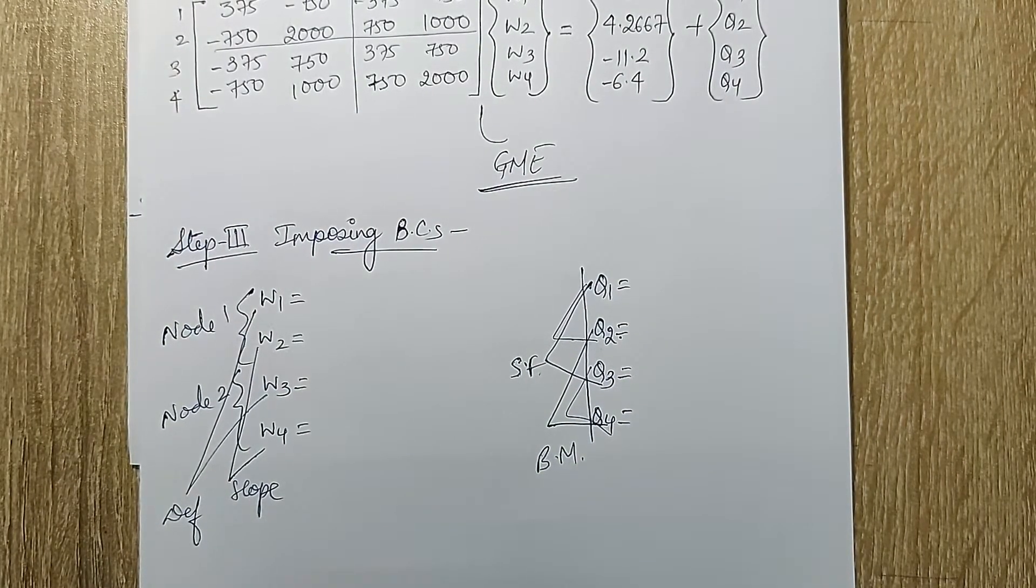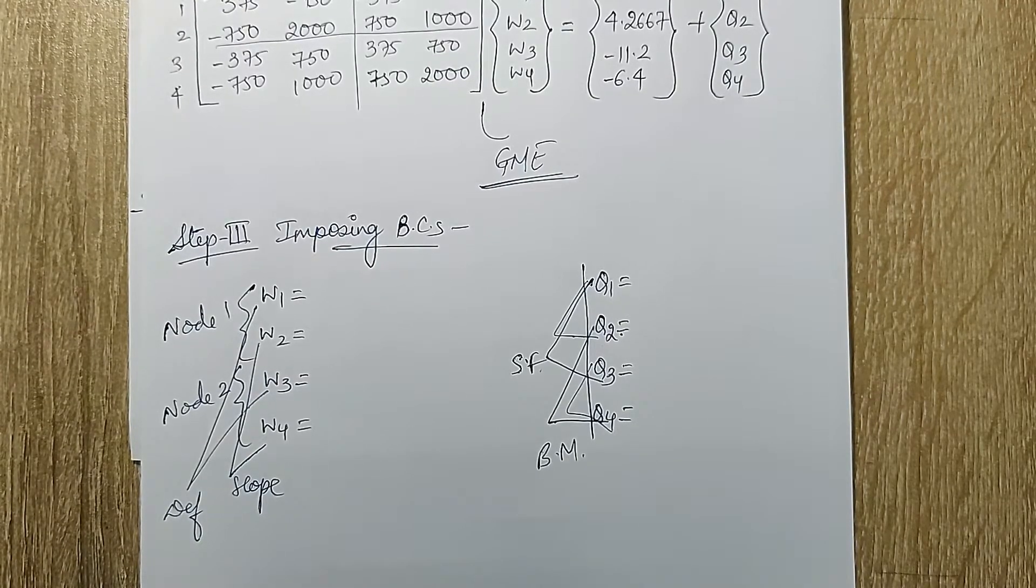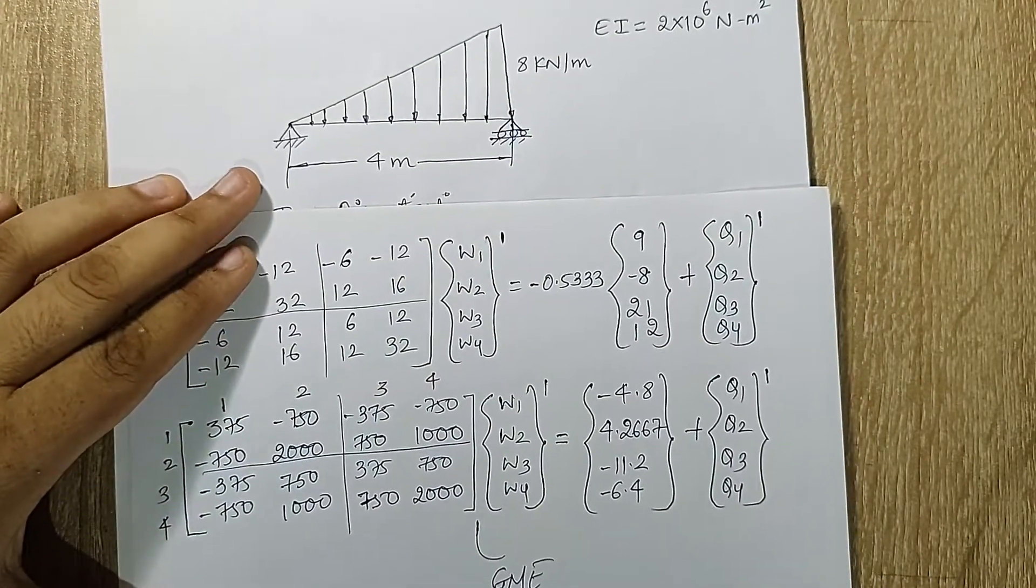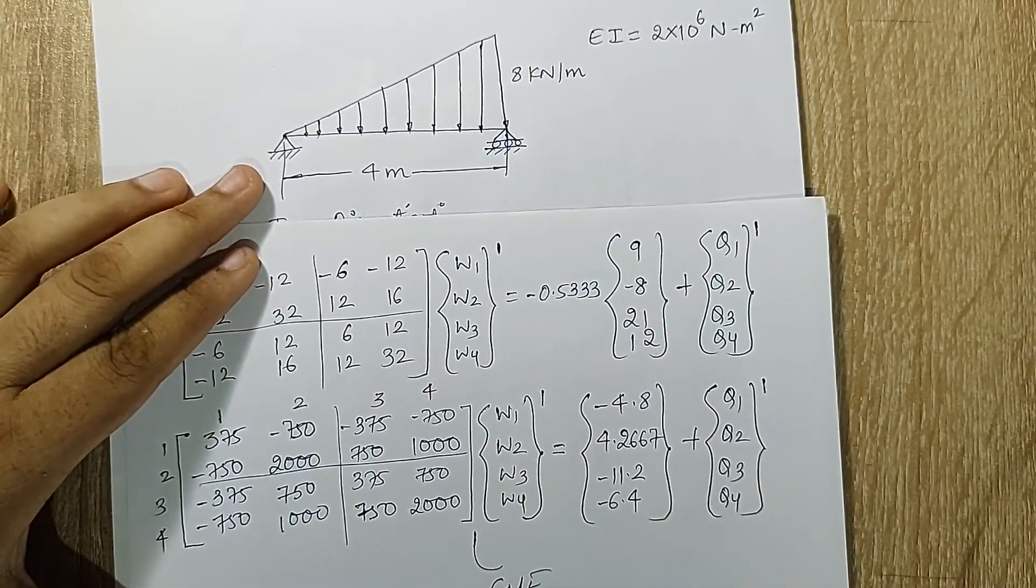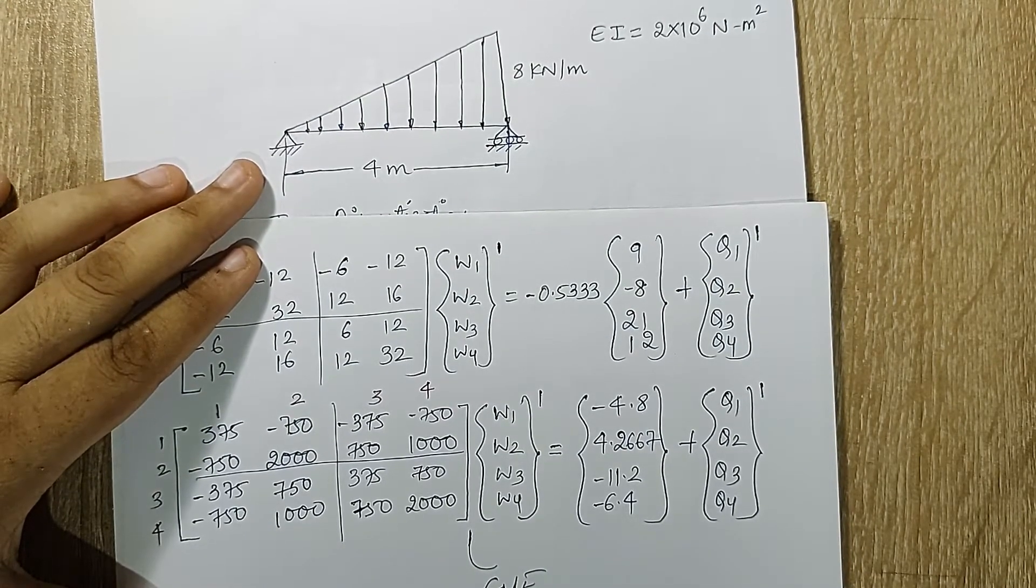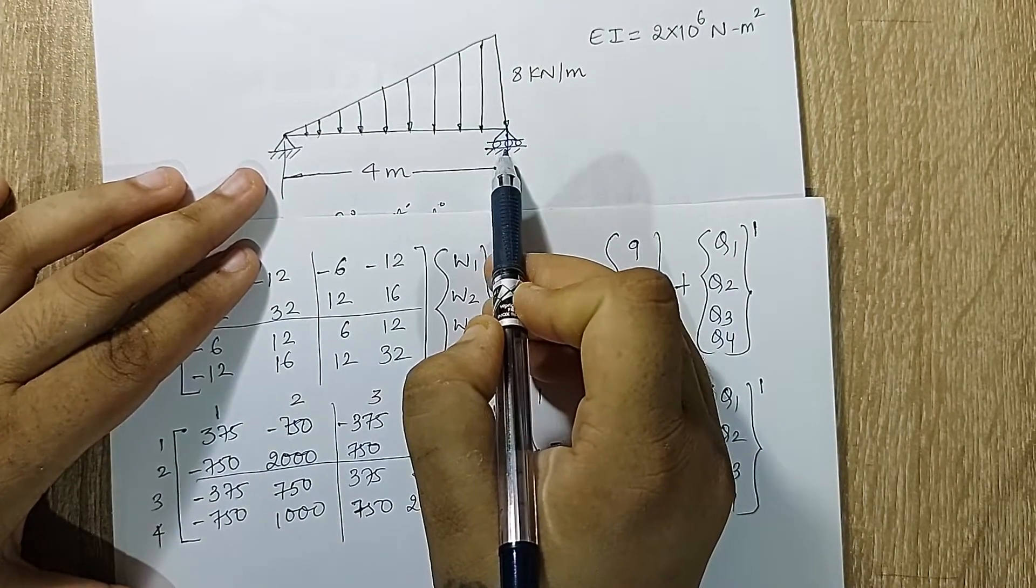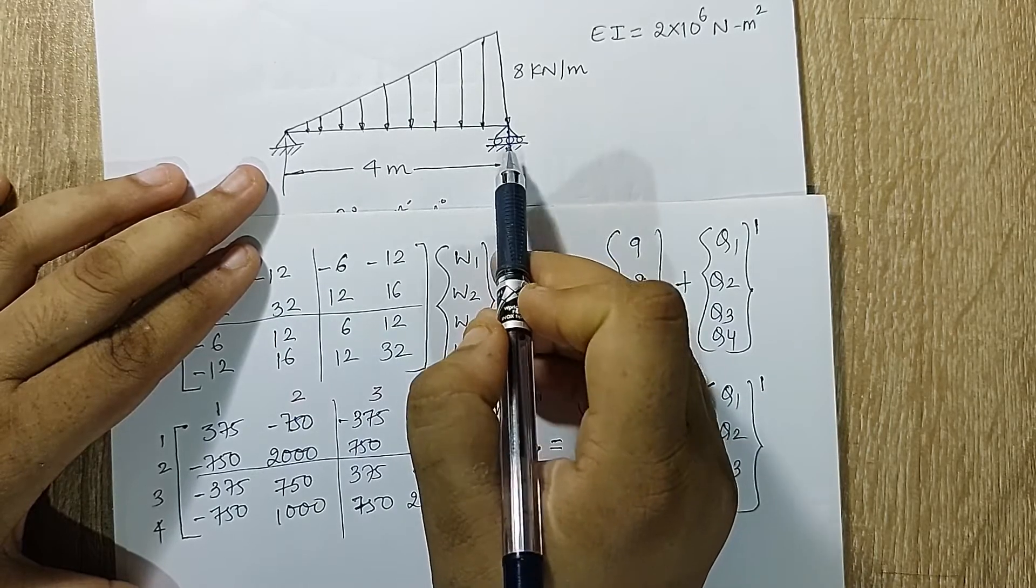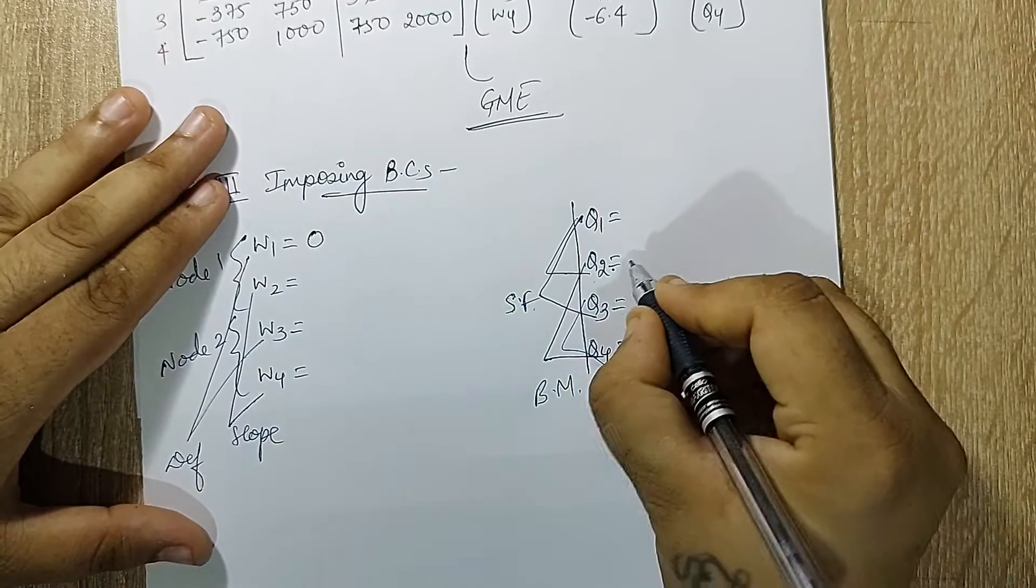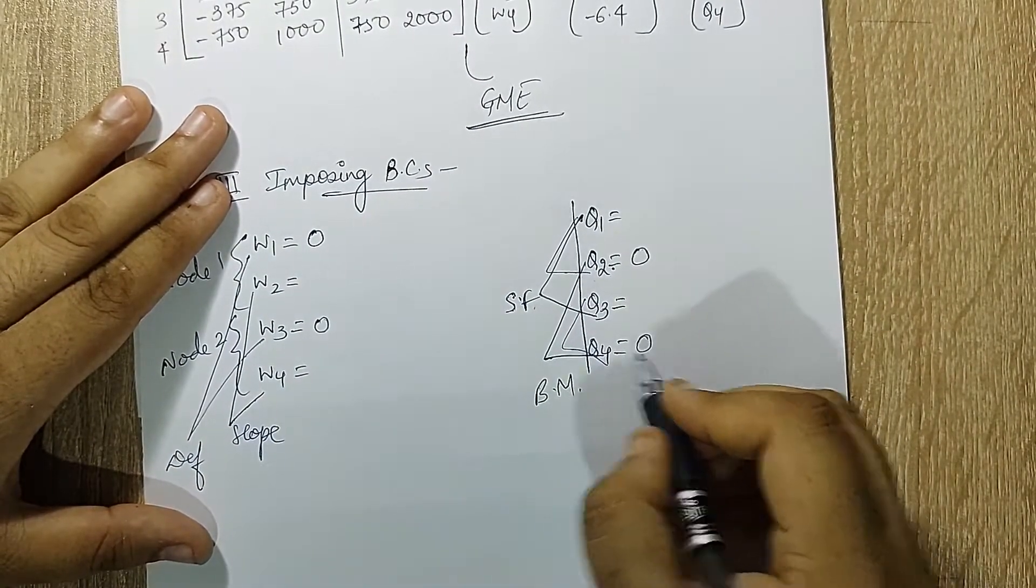Now let's go for the boundary conditions. I have already given you some standard boundary conditions. One is hinge over here, so in that case my deformation will be 0 and my bending moment will be 0 at this node 1. For this node, since there is a roller, again the same boundary condition is applied, that is deflection is 0 and bending moment is 0. So let's go to the boundary condition. I have w1 equals 0, q2 equals 0, w3 equals 0, q4 equals 0.